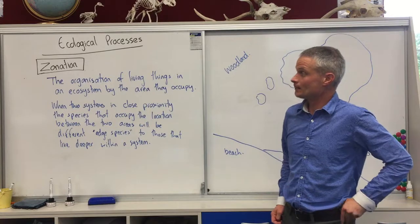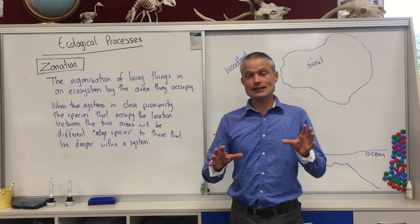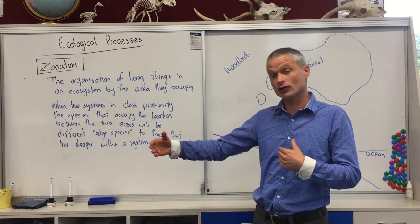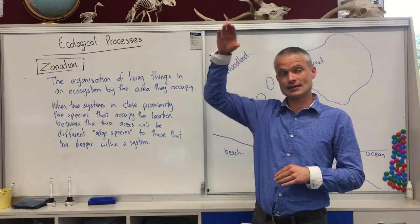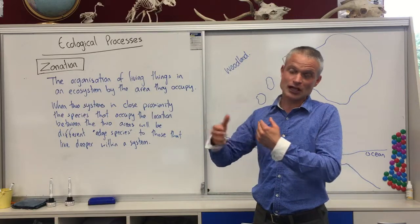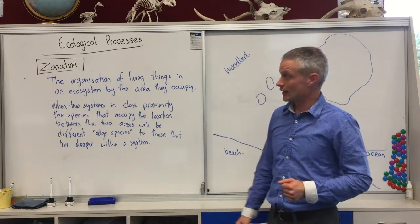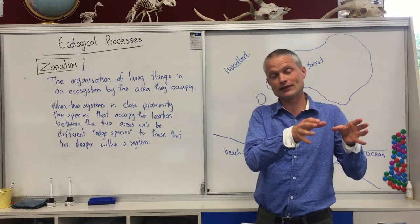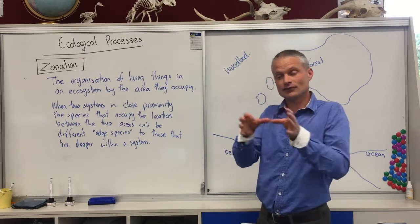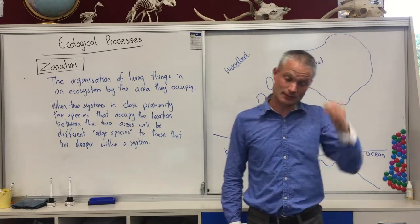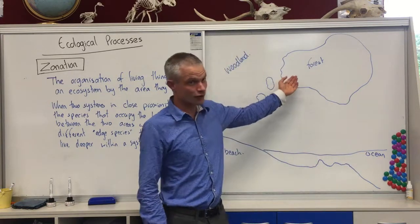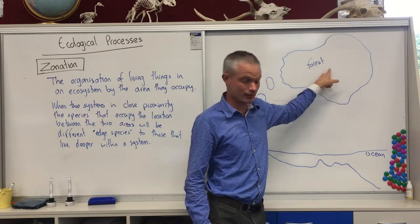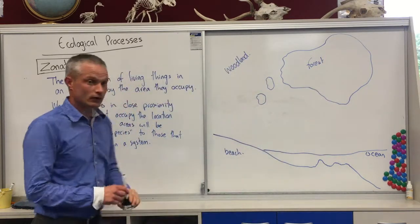So the first one is zonation. Each of them is a way of dividing the biological living things within an ecosystem — dividing them either by the area they occupy within that ecosystem, the heights that they occupy, or the changes that occur over time. Zonation is the changes within a biological system — the changes in what living things are in an ecosystem in different areas within that ecosystem. When you look at two ecosystems that are joined together, such as a forest and a woodland, the species on the edge of the forest are going to be different to the species within the middle of the forest. That's what zonation is.